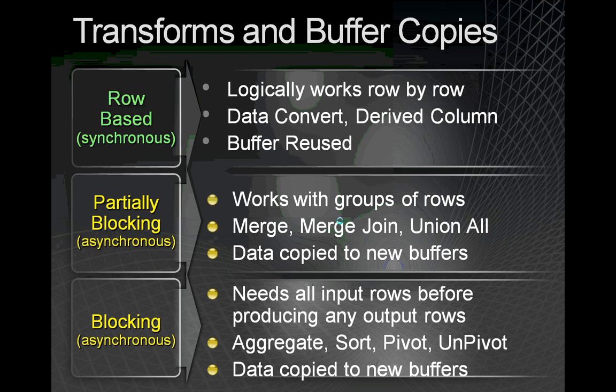The third group, blocking asynchronous transforms, are like extreme versions of the previous group. They have to hold on to all of the input data before they can write any output data. Using these transforms in data flows with large batches of data can often slow down your data flow significantly. If you use these in large data flows, make sure you're not using them redundantly. If you have two aggregates or two sorts on the same data in the same flow, rework your package to try to get down to one.